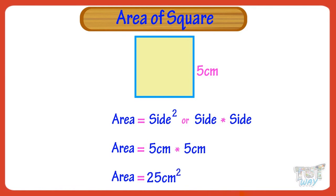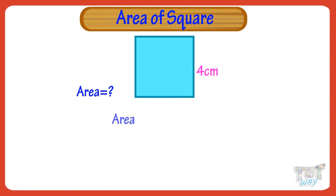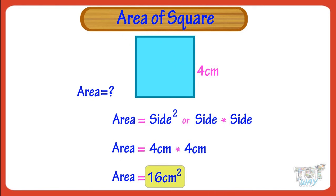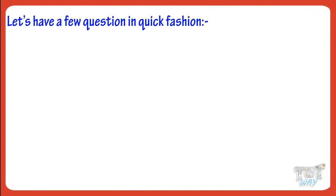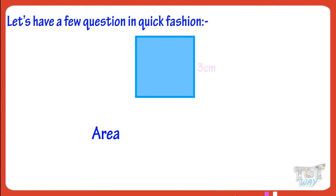Area is always mentioned in square units. Here we have another square. Its side is 4 cm. The area of square is side multiplied by side. So, 4 multiplied by 4 equals 16. So, area of this square equals 16 cm square. Area of square with side 5 cm will be 5 multiplied by 5, equals 25 cm square. Area of square with side 3 cm will be 3 multiplied by 3, equals 9 cm square.